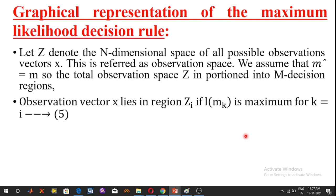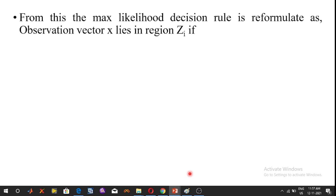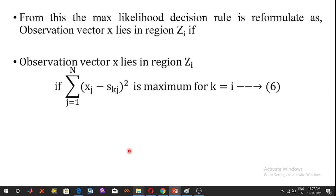Observation vector X lies in region Zi if L(MK) is maximum for K = I. From the log-likelihood function, L(MK) is minimized by minimizing the summation term: sigma j=1 to N of (Xj minus SKj) squared, for K = I. The maximum likelihood decision rule is then reformulated as: observation vector X lies in region Zi if this squared sum is minimum for K = I.